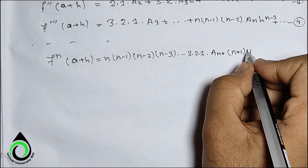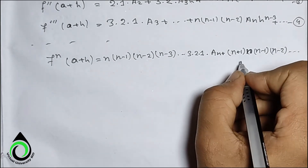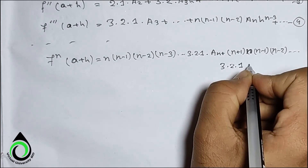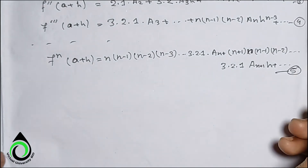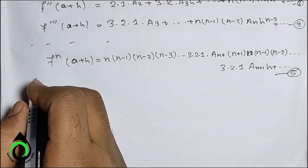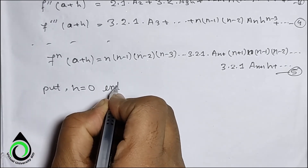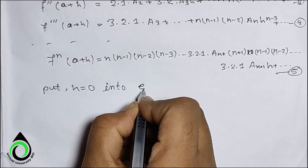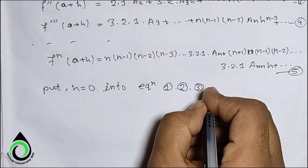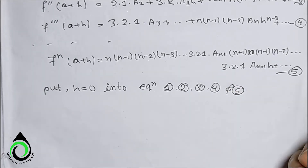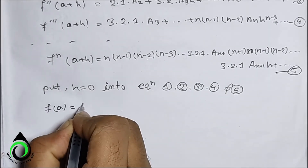Continuing, the n-th derivative gives: (n+1)·n·(n−1)·...·3·2·1·aₙ₊₁·h + 0 as the first term. So putting h equal to zero into equations (1), (2), (3), (4), and (5), we can write f(a) = a₀, f'(a) = a₁. Then x resolves to a.